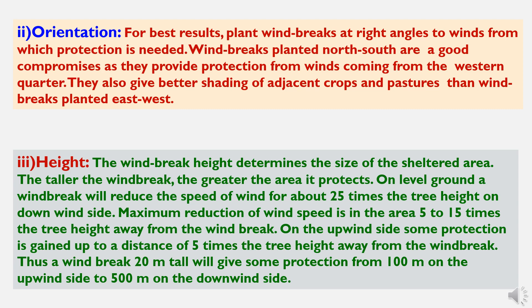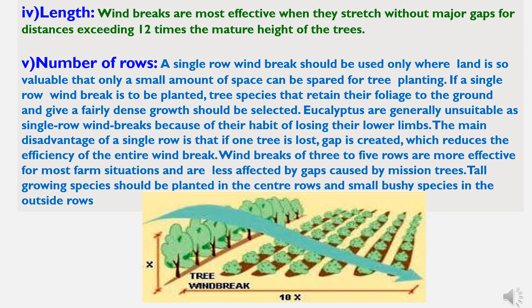Thus a windbreak 20 meters tall will give some protection from 100 meters on the upwind side to 500 meters on the downwind side. The fourth characteristic is length. Windbreaks are most effective when they stretch without major gaps for distances exceeding 12 times the mature height of the trees. The fifth characteristic is number of rows. A single-row windbreak should be used only where land is so valuable that only a small space can be spared, and tree species that retain foliage to the ground should be selected.